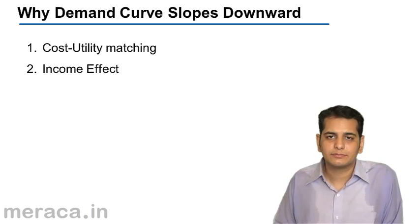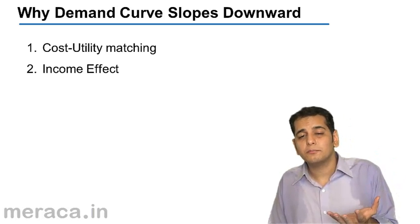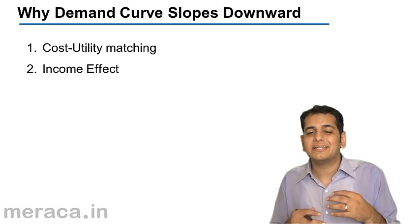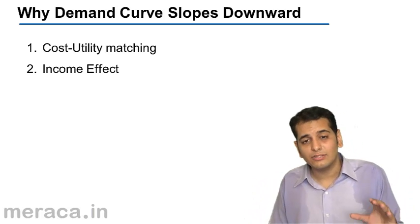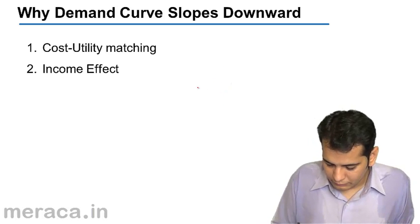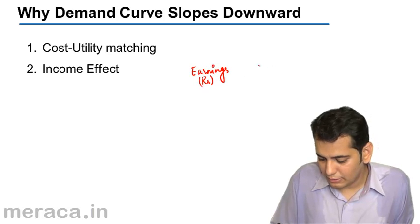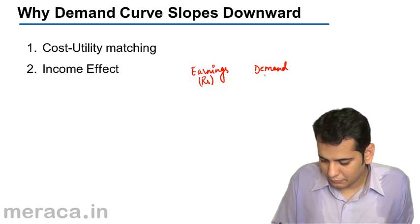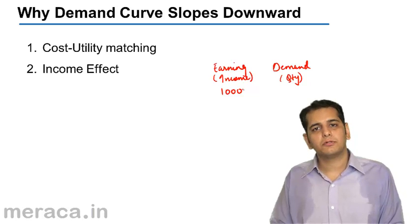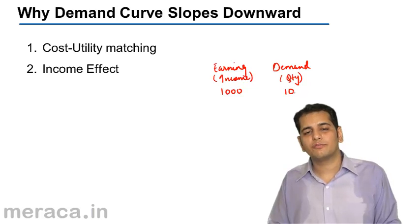The next point is income effect. Income effect says that as the income of the individual rises, the disposable money in his hand increases, and he tends to consume more and more of that product. Now let's assume a case where the income in the hand of the consumer is not rising but the price is falling. Let's assume that the consumer is earning an income of rupees 1000 per month. If the product that he wants to buy costs him rupees 100, he can buy 10 units of that product within his income.